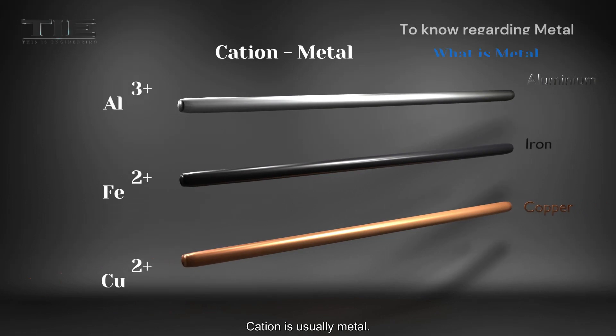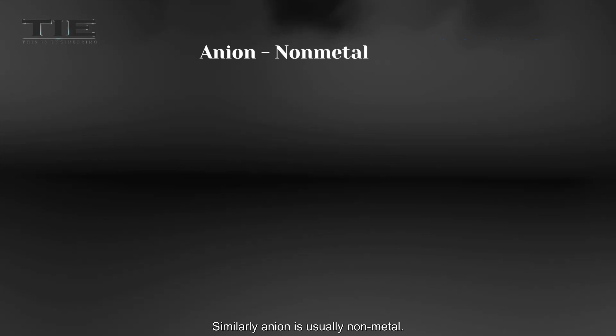Cations are usually metals. Similarly, anions are usually non-metals.